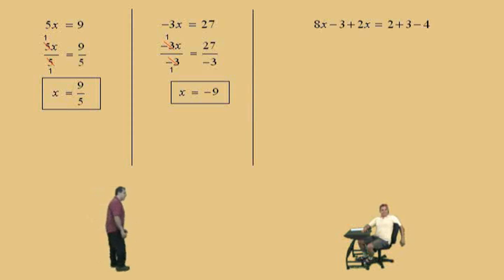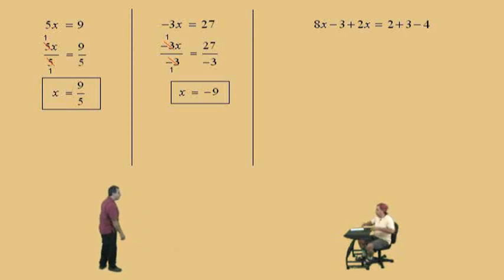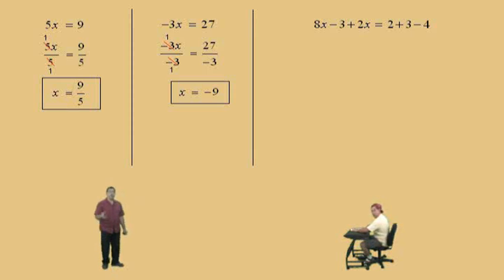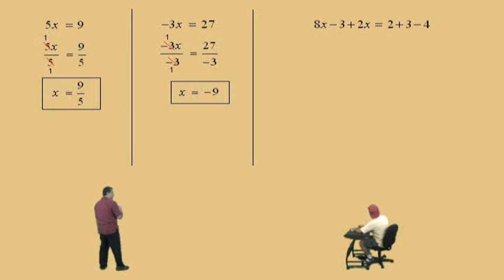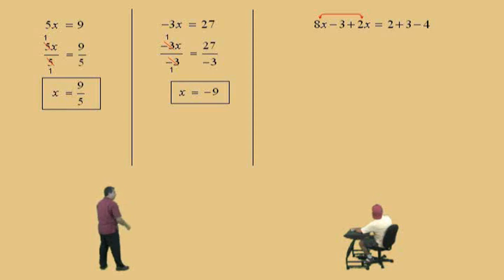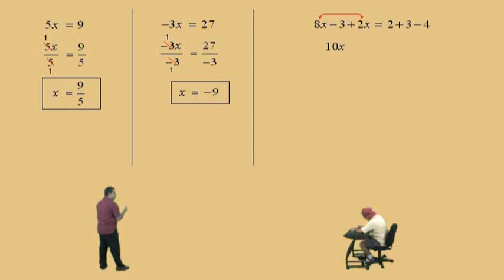Let's continue on. Now don't get scared. This particular equation requires that we combine like terms first. Let's look on the left-hand side. Our like terms are 8x and 2x. That's right, so that gives us 10x subtract 3.